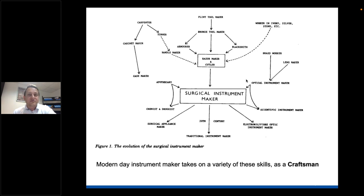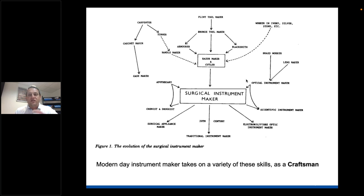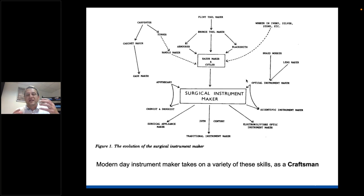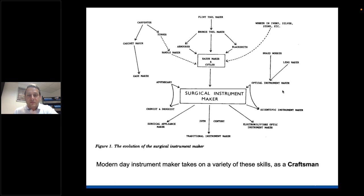Here we have a diagram showing the evolution of the surgical instrument maker - from a journal article I found from the mid-1980s, which I'll share in the chat. It shows how the surgical instrument maker evolved from flint tool makers and bronze tool makers, incorporating elements of carpentry, working with ivory and silver for handles, and blacksmithing - eventually coming under the banner of cutler and razor maker, before becoming the surgical instrument maker we know today.